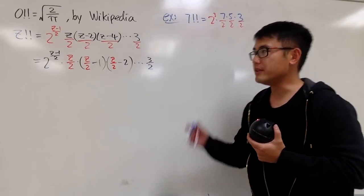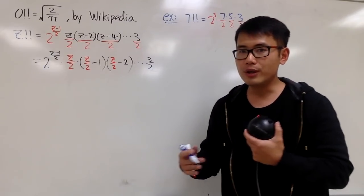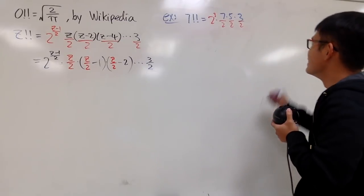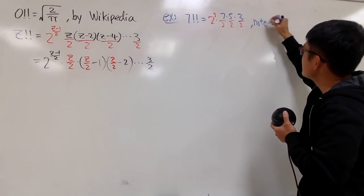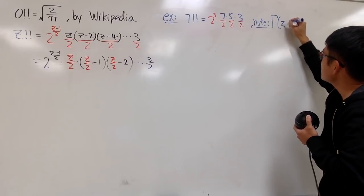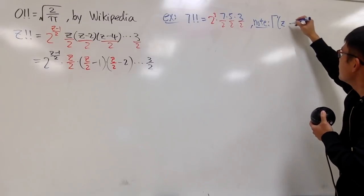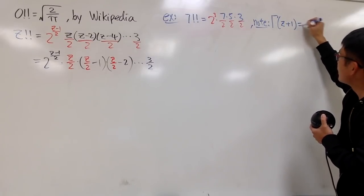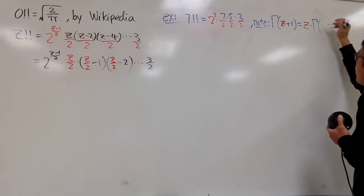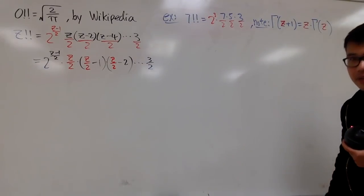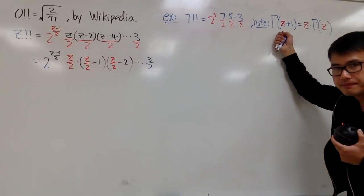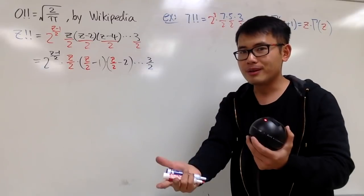Let me make a note right here. This is one of the properties that we need from the gamma function. Recall that when we have gamma of Z plus 1, this is equal to Z times gamma of Z. In order for us to actually bring out the gamma function, we have to look at this backwards, because at the moment I cannot legitimately bring a gamma function in directly.